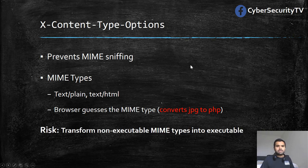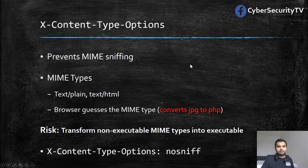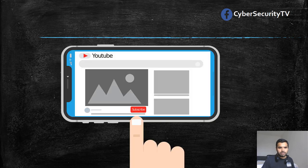The risk here is transforming a non-executable MIME type into an executable one — for example, JPEG is not executable but PHP is. When the browser does that, it's a big problem because there's nothing you can do. That's why this header is very useful: it restricts the browser from changing the MIME type and tells it to use the one provided by the application. Developers must make sure they provide the correct content type and MIME type for each and every request and response. Whenever you do a pen test, make sure you check for these headers and see if you can exploit the application without them.